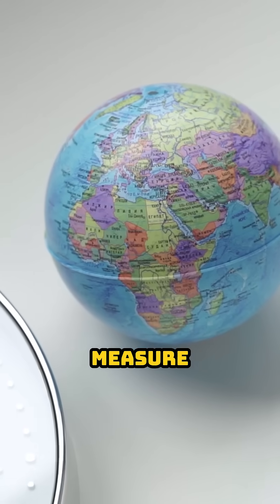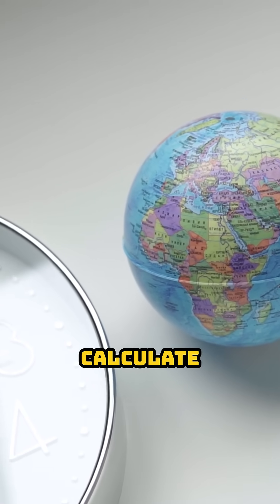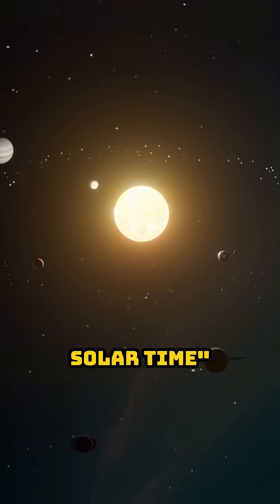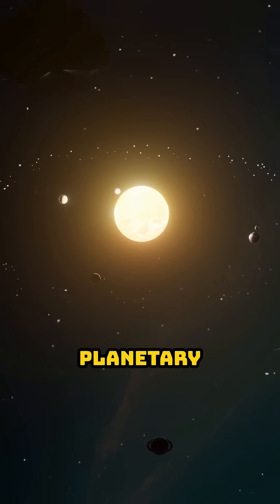Since we can't measure exact time there, we'll calculate the local solar time by converting Earth time into the planetary equivalent.